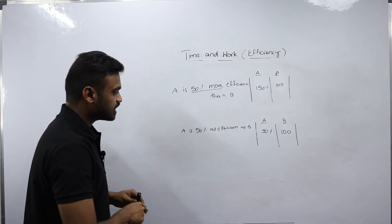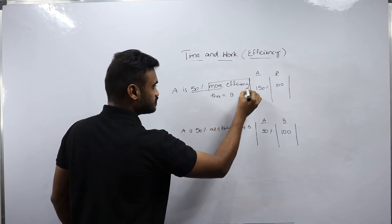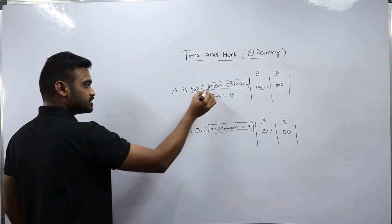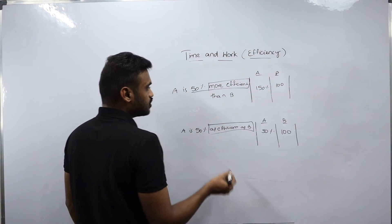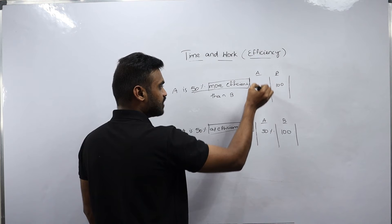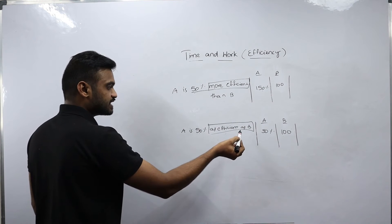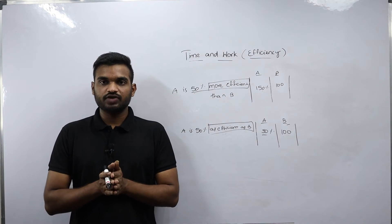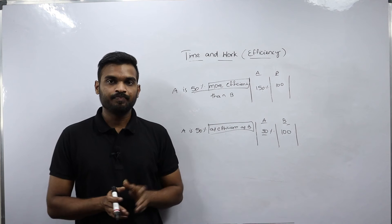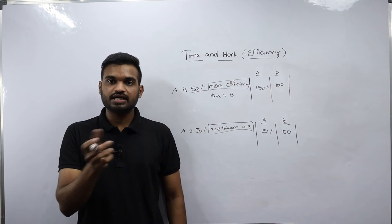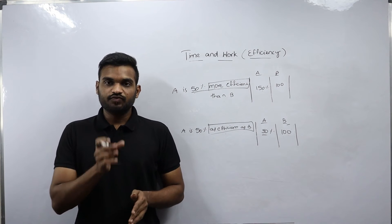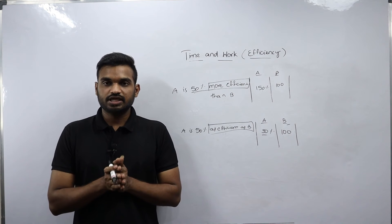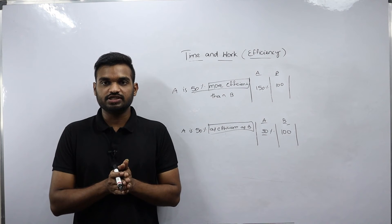You need to read the keywords very carefully. Here the keyword is 'more efficient,' while the other example uses 'as efficient as B.' For 50% more efficient than B: if B is 100, A becomes 150. For 50% as efficient as B: B is 100% and A is 50%. Read problems very carefully to check whether it says more efficient or as efficient, and whether it gives twice the time or twice the efficiency. Reading the problem wrongly will cost you all your time in exams.